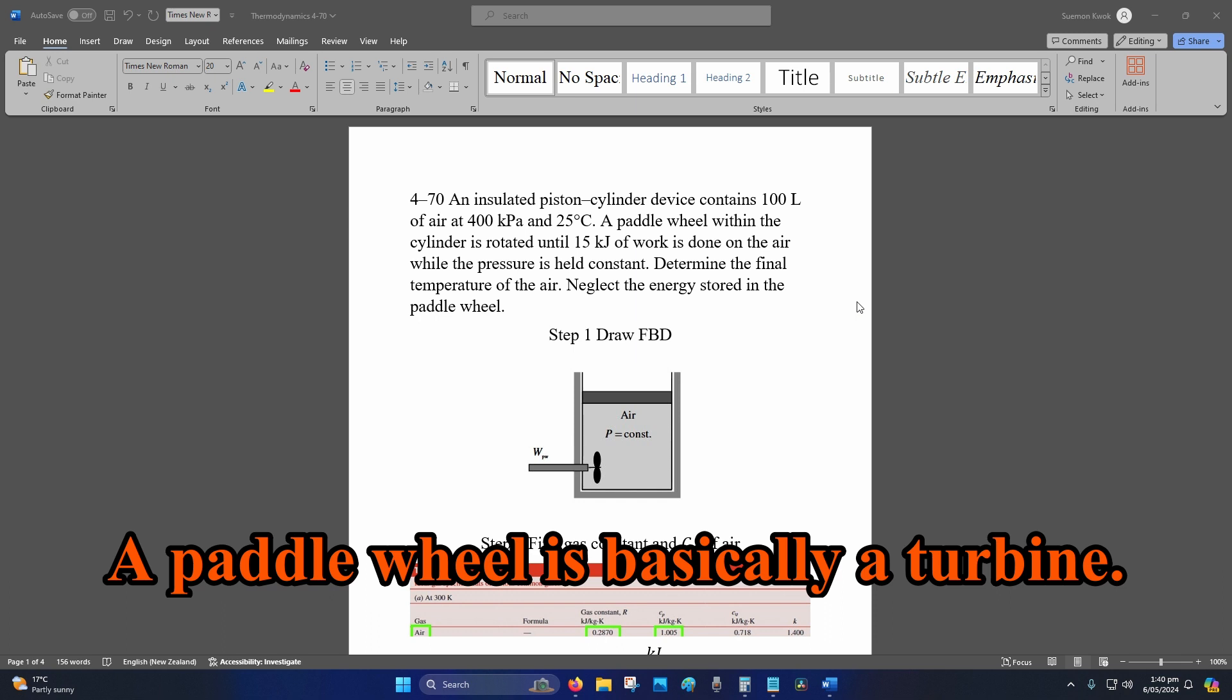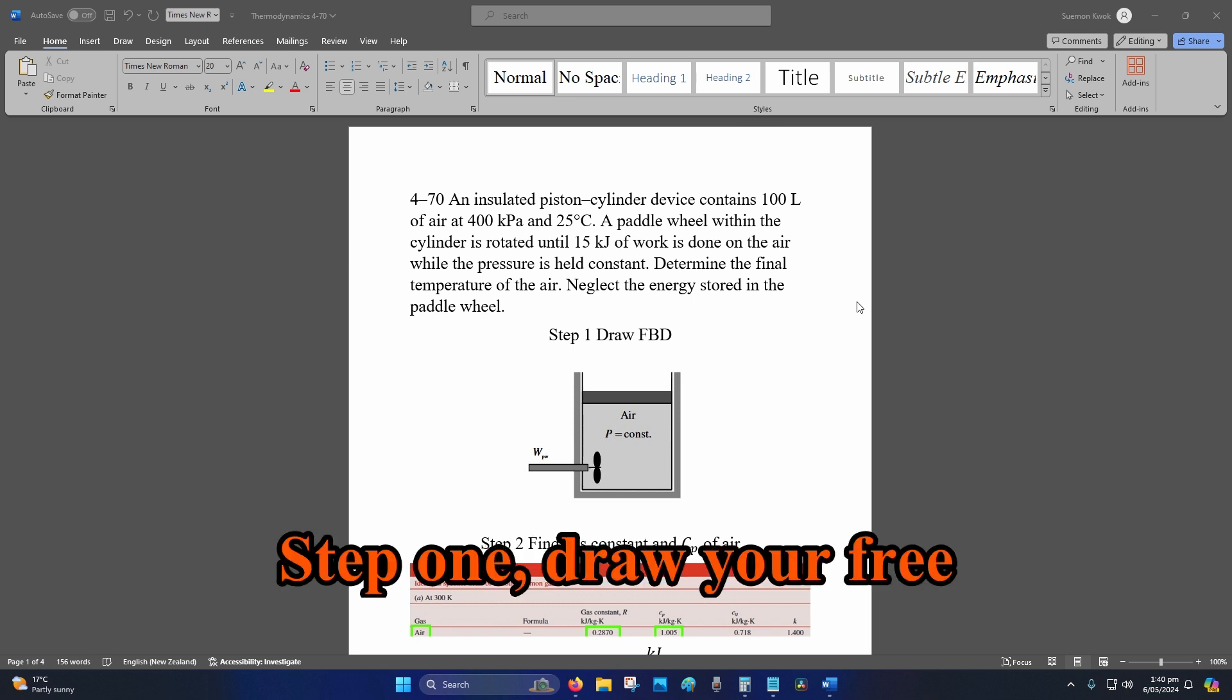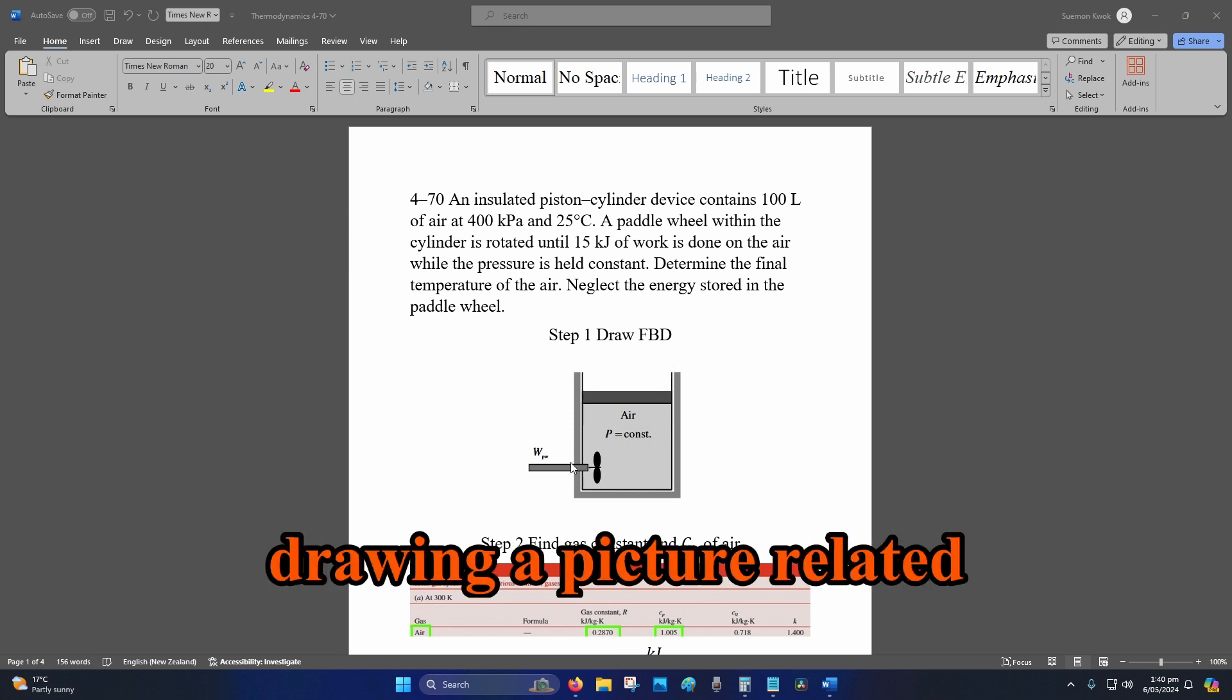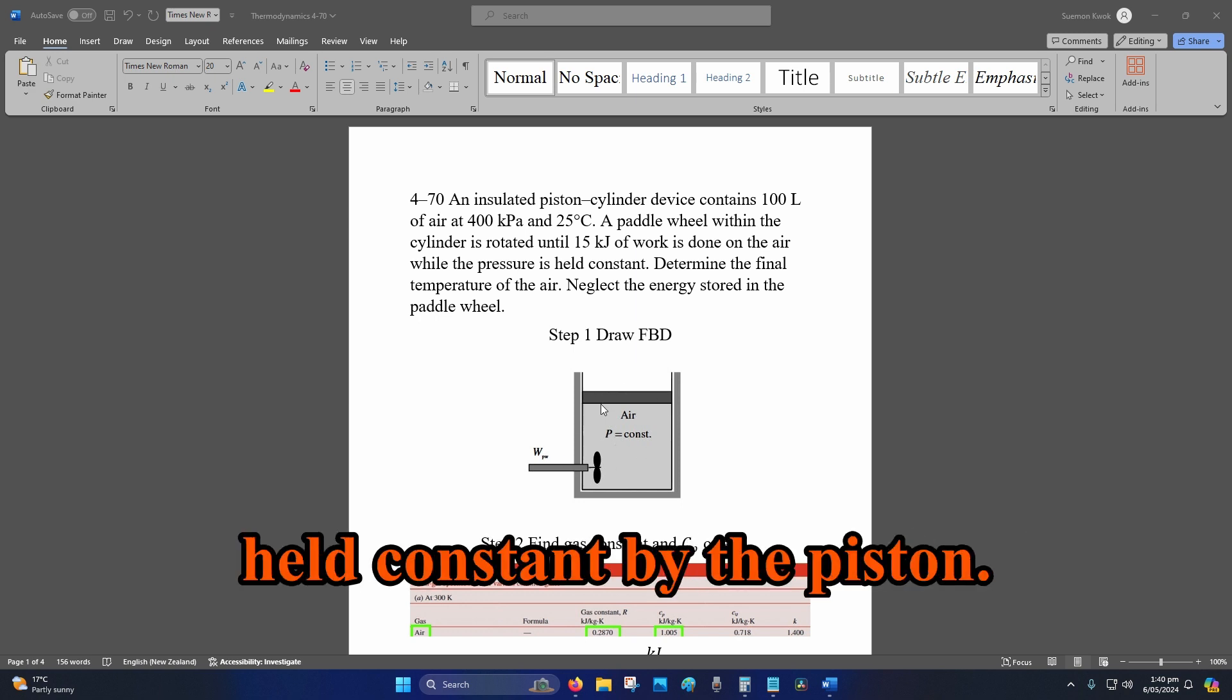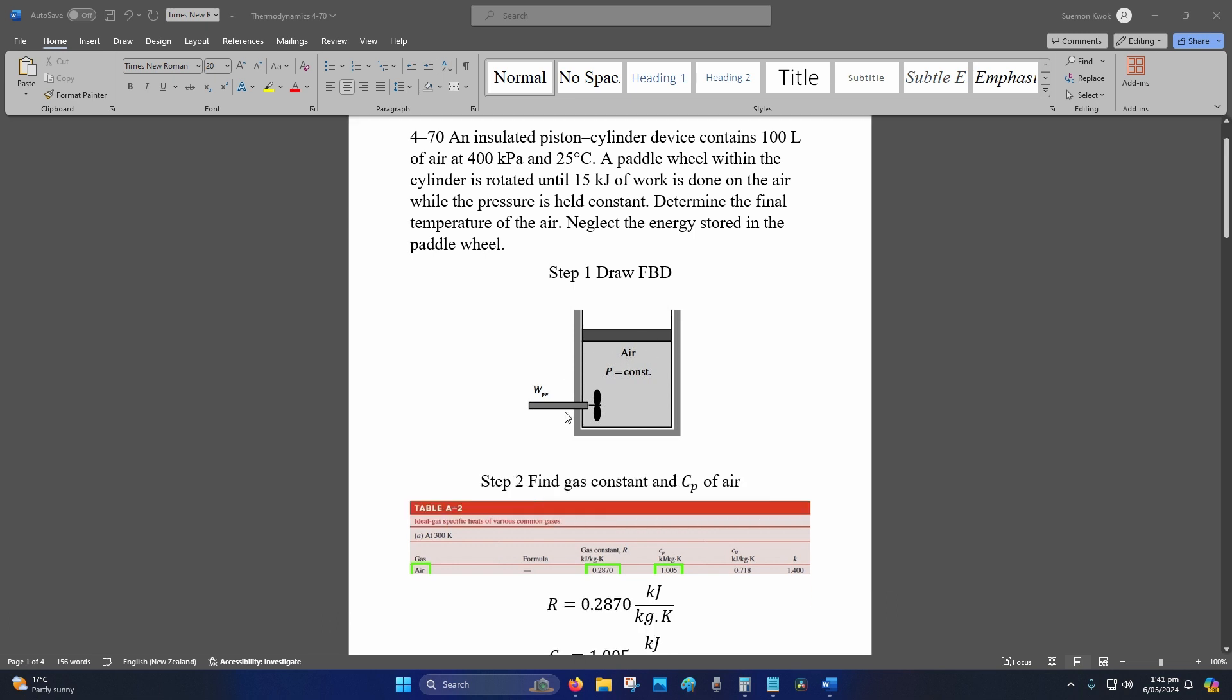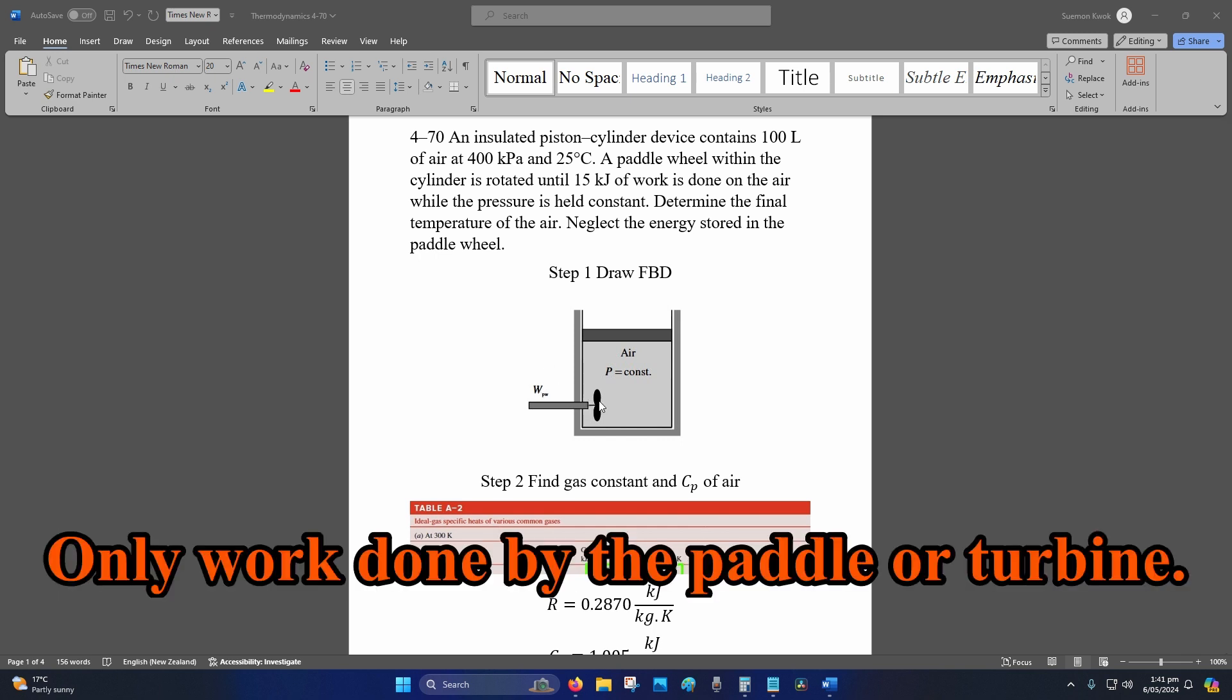A paddle wheel is basically a turbine. We're going to ignore kinetic and potential energy from external sources. Step one: draw your free body diagram, your FBD. You get a point for drawing a picture related to the question. It also helps you visualize the problem. It stated that pressure is held constant by the piston, so that means there's no change in volume, so there is no boundary work, only work done by the paddle or turbine.